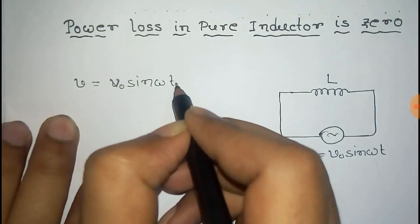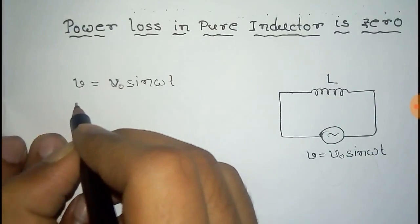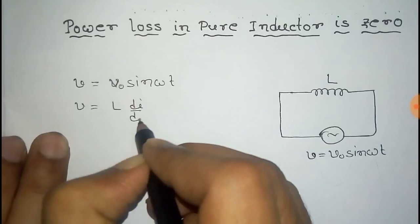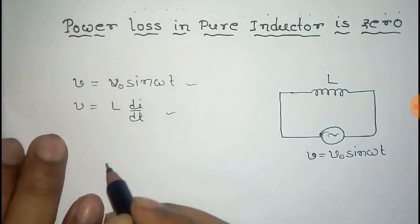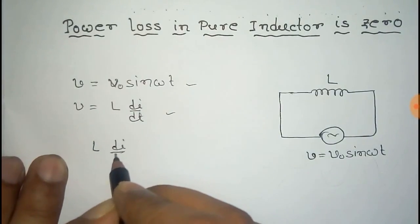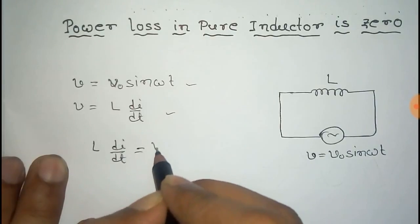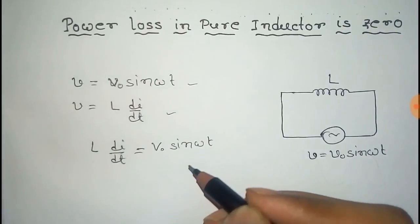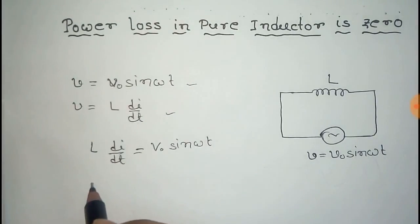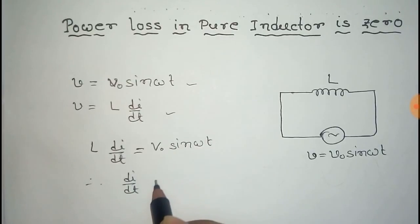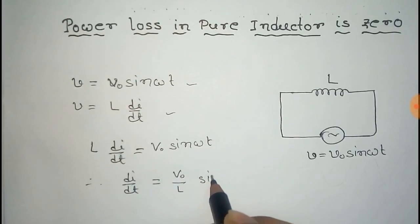For a pure inductor circuit, voltage is equal to L di/dt, where I is the instantaneous current in the circuit. From these two equations we get L di/dt equal to V naught sine omega t, and from this we get di/dt equal to V naught by L sine omega t.